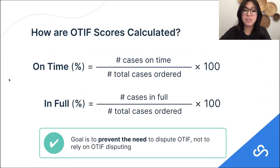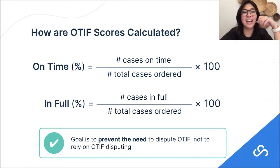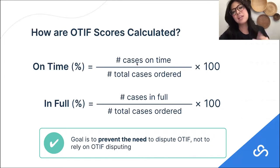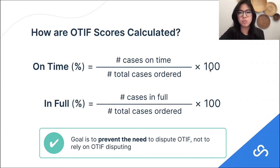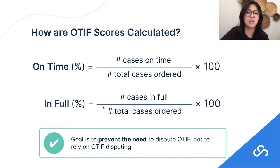How OTIF scores are calculated today: Walmart breaks them out into the on-time piece and the in-full piece. For on-time, they're looking at the number of cases that fall within that on-time bucket, divided by the number of total cases that were ordered, multiplied by 100 — and you get the on-time percentage. The in-full piece is very straightforward: it's just the number of cases received in full divided by the number of total cases ordered, multiplied by 100, and you get the in-full percentage.